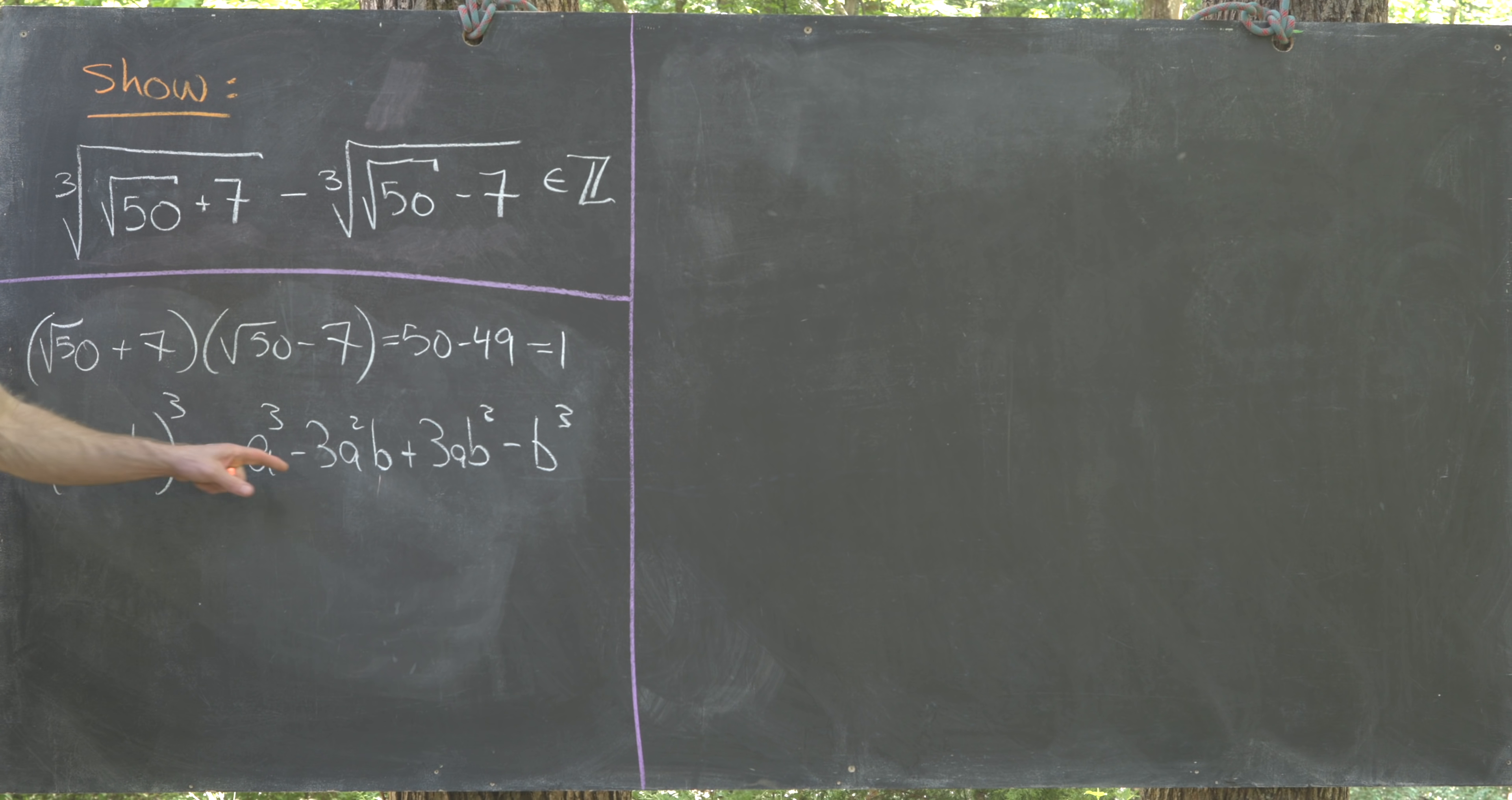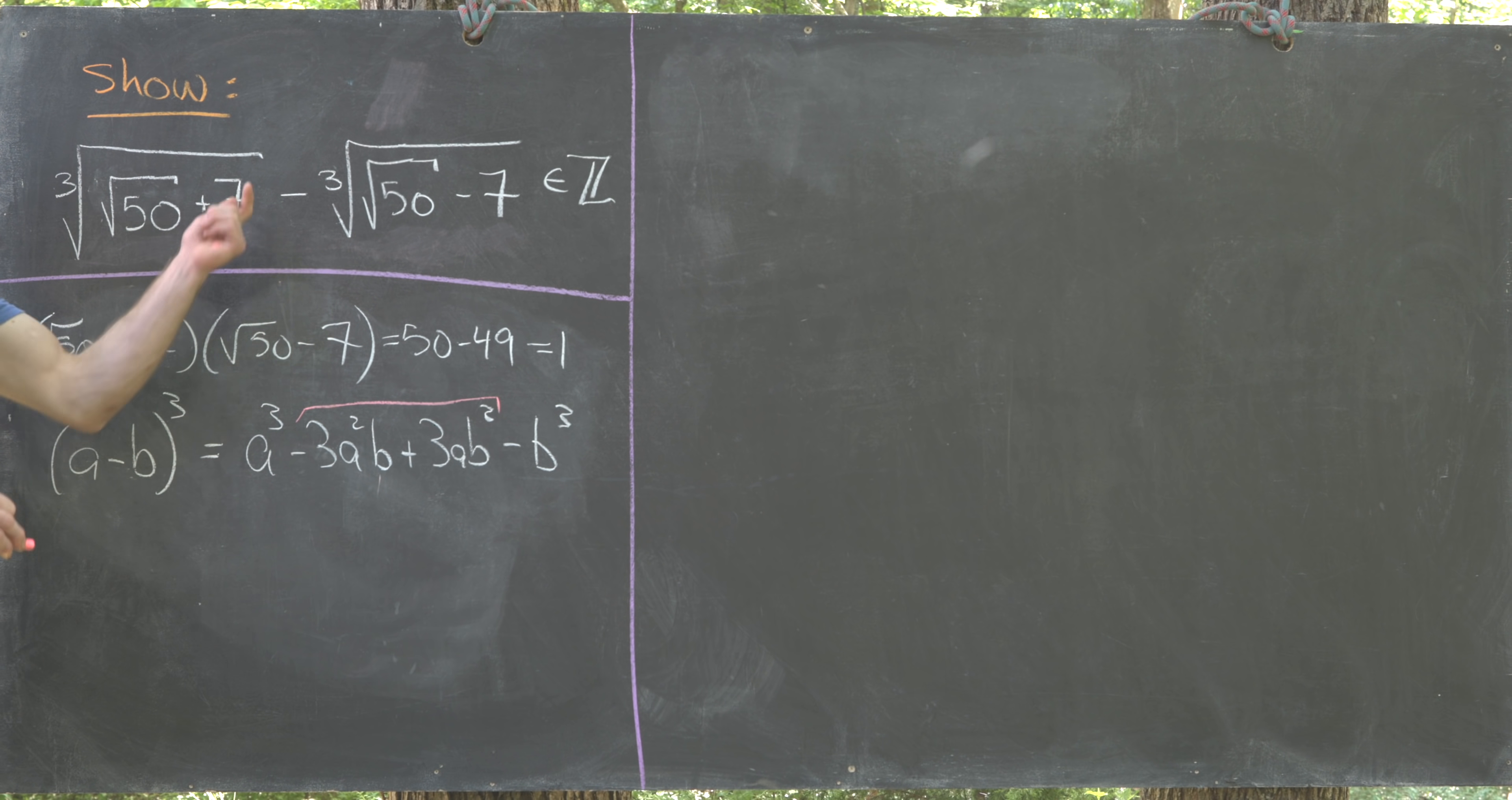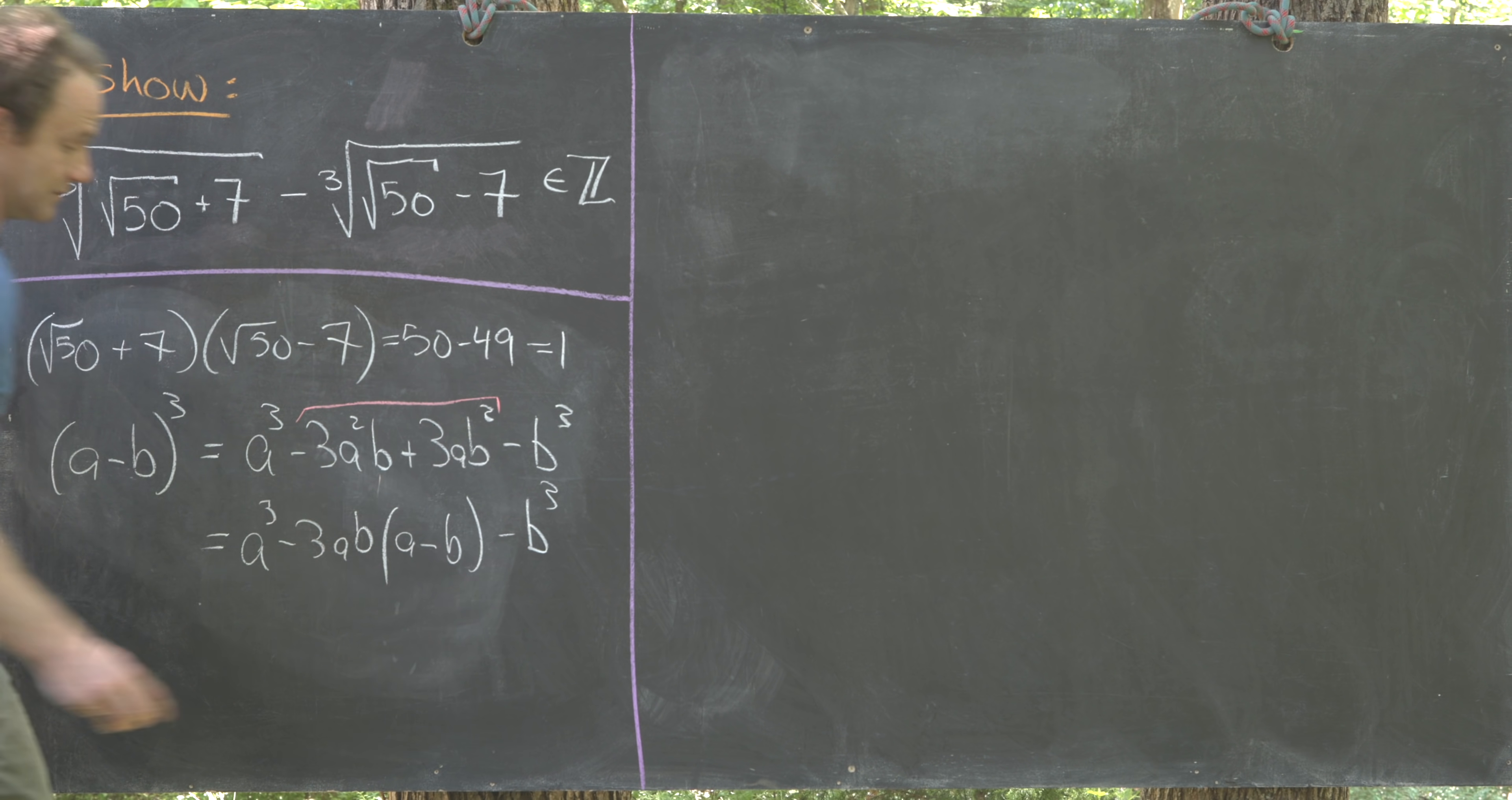I'm going to factor a greatest common factor out of these middle terms because it's going to help us for our calculation. Doing that I can have a cubed minus 3ab times a minus b minus b cubed.